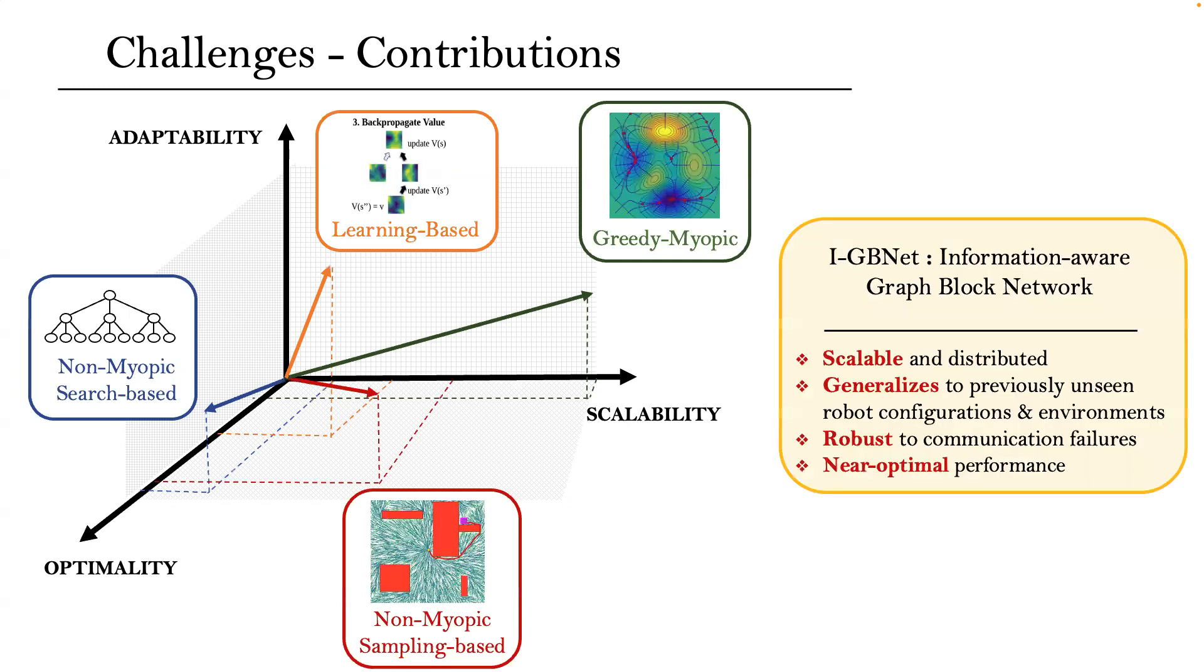In this work, we designed a method to push the boundaries in all of the axes by introducing the information-aware graph block network. Our key contributions are summarized as follows. We are utilizing a graph neural network to design a distributed method for active information acquisition that is scalable, generalizes to previously unseen multi-robot configurations and environments, and is robust to communication failures. We are imitating a non-myopic sampling-based approach and exhibit near-optimal performance.